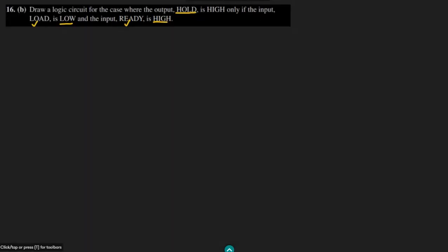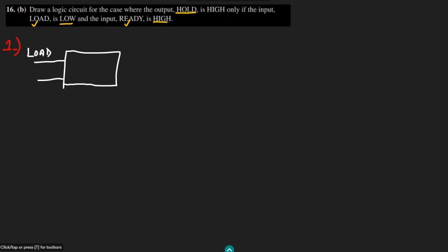The first step for this question is drawing the simplified diagram. The simplified diagram shows a block with two inputs — load and ready — giving a single output which is hold. This is step number one.